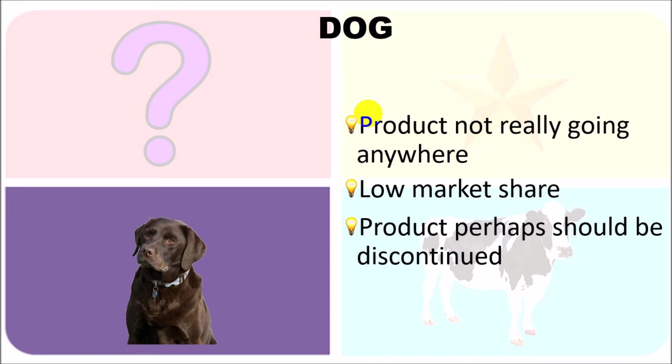So those are the four categories: the stars, the question marks, the cash cows, and the dogs.